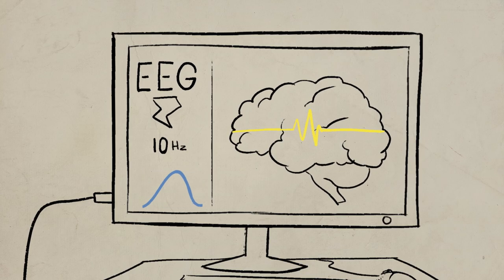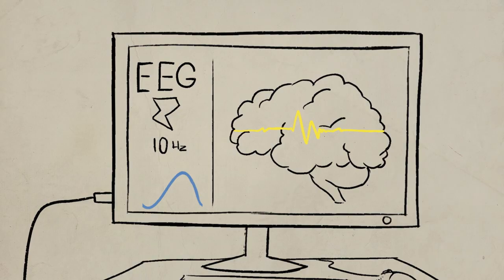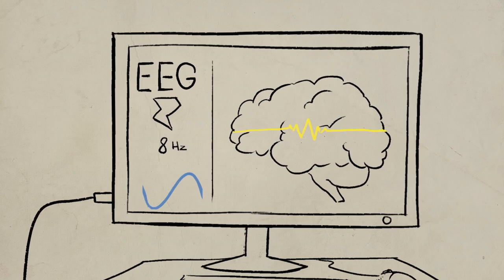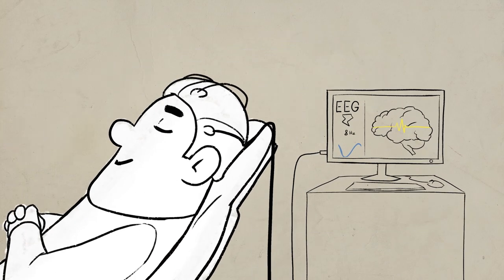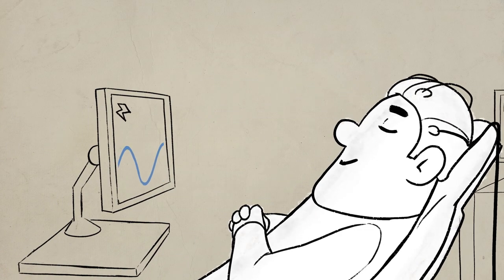The QEEG neurofeedback is the study of the measurement of the brain's electrical activity. Neurofeedback entails applying electrodes to the client's head, which enable it to read the electrical signals emitted by the brain. These signals represent the mental state in which we find ourselves.